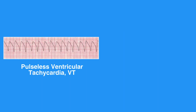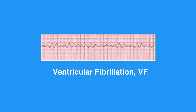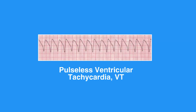Pulseless Ventricular Tachycardia and Ventricular Fibrillation are life-threatening cardiac rhythms that result in ineffective ventricular contractions. The ventricular motion of VF is not synchronized with atrial contractions. VT or VTAC is a condition in which the ventricles contract more than 100 times per minute. VF or VFib is a rapid quivering of the ventricular walls that prevents them from pumping.